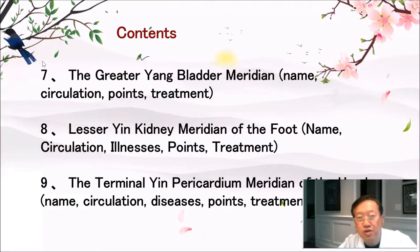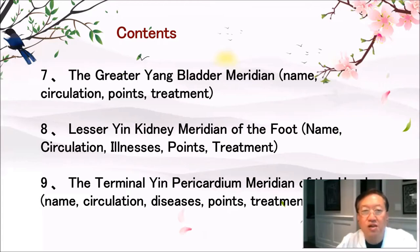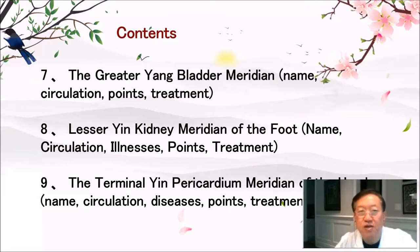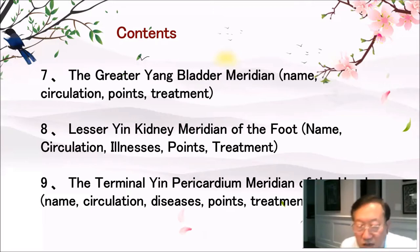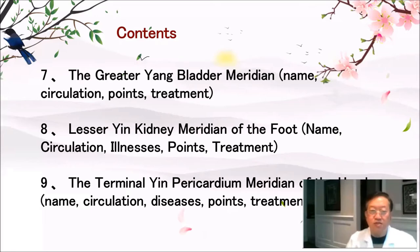Contents: Section seven, the greater yang bladder meridian — name, circulation, points, and treatment. Section eight, the lesser yin kidney meridian of the foot — name, circulation, illness, points, and treatment. Section nine, the terminal yin pericardium meridian of the hand — name, circulation, diseases, points, and treatment.